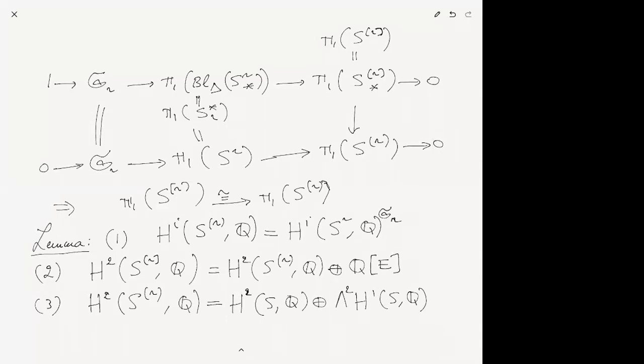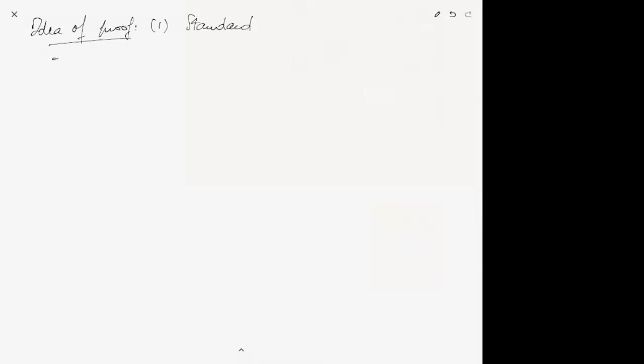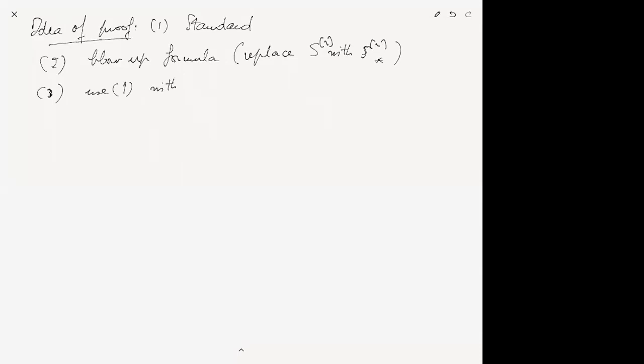Let me briefly summarize how we prove these: (1) is standard; (2) uses the blowup formula and replaces S*_r with S_r lower star; (3) uses (1) with the Künneth formula and the same codimension-two replacement. That's all that needs to be said. We're stopping now for a five-minute break.